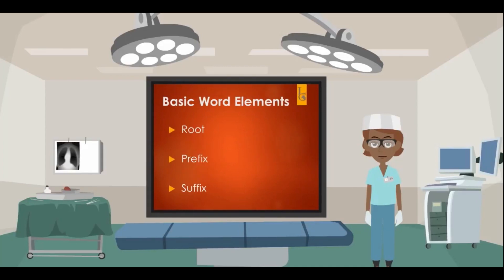Basic word elements are the root, the prefix, and the suffix. The anatomy of a word may consist of these three elements. Breaking down medical terms is done by identifying the root, the prefix, or the suffix.